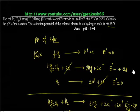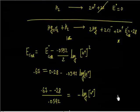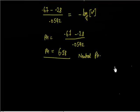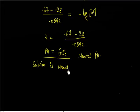Let us check this value — it is 6.61, almost the same. So this is almost neutral pH. We can say the solution is slightly acidic, or weakly acidic in nature.